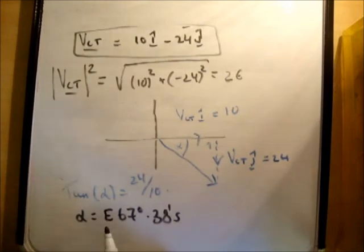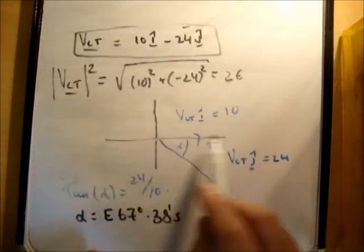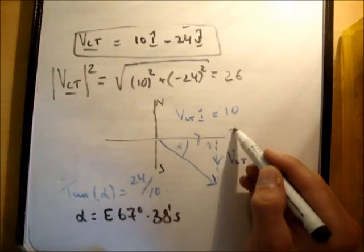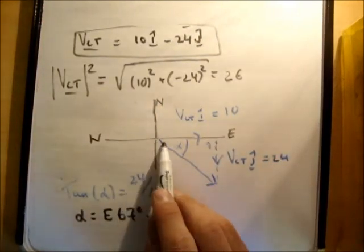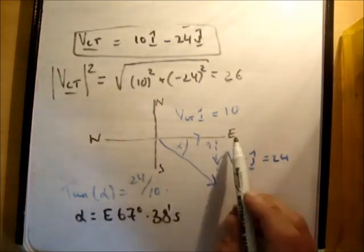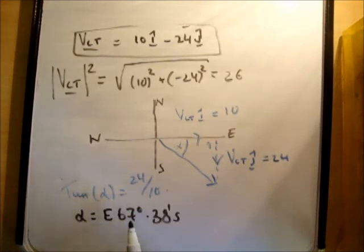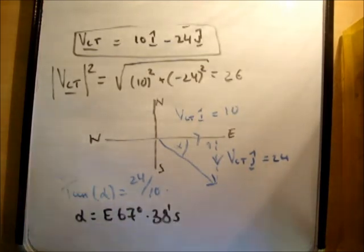Now how do you know it's going east? Well because if this is your compass, this becomes north, south, east, west. We're going this way. So we're going south of east and the angle was 67 degrees 38 minutes. And that is correct.